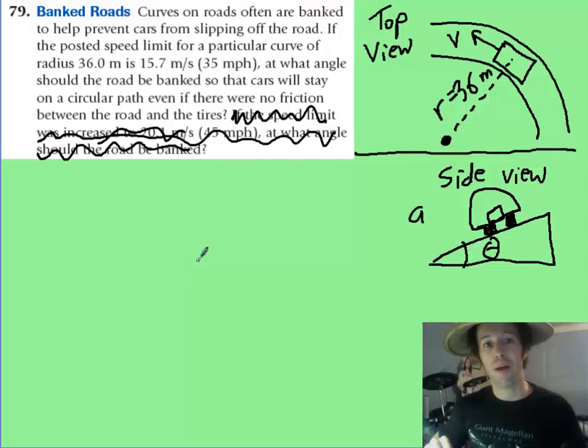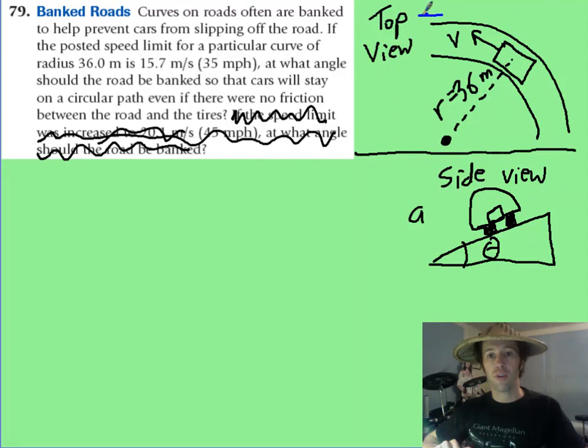Here's a banked turn problem, a classic physics circular motion problem that can be quite difficult. Now, it will help if you can see a picture. This car is from the bird's eye view. It's going around in a circle, and we're going to say that's part of circular motion as it goes along here.